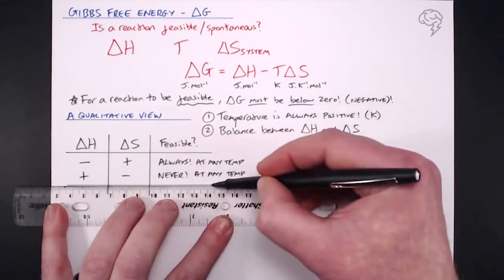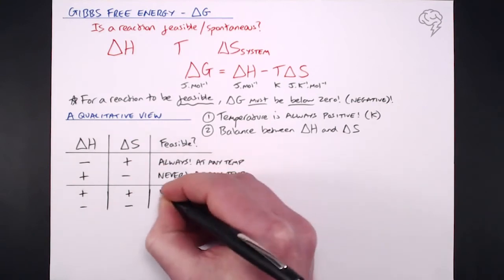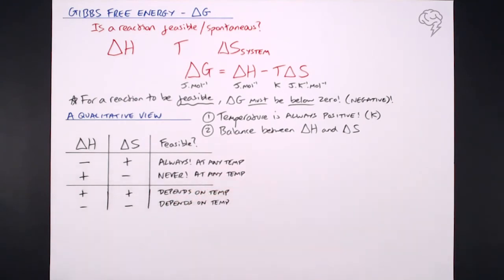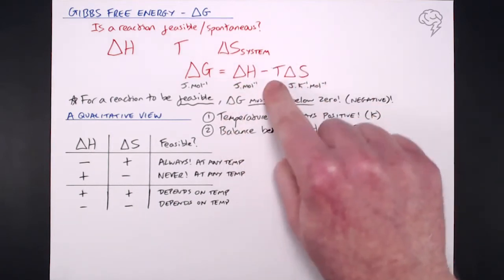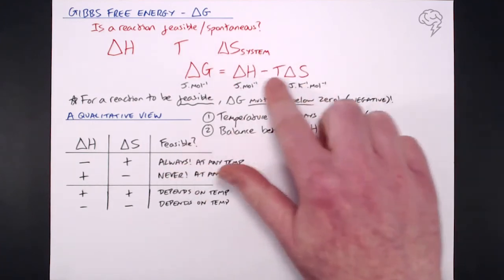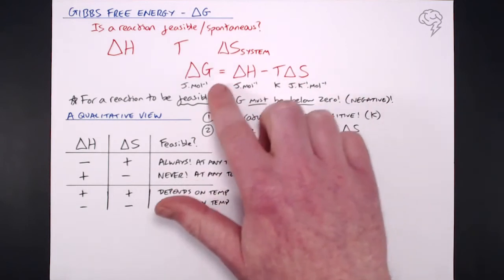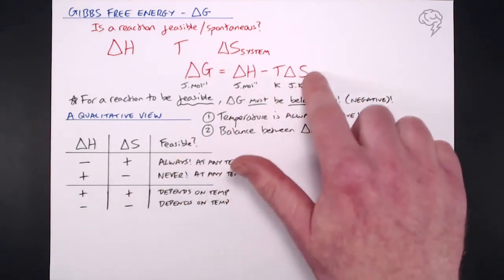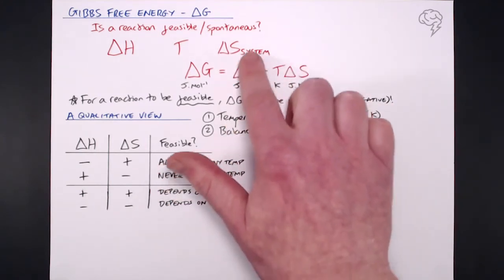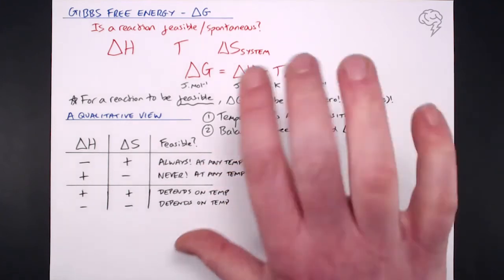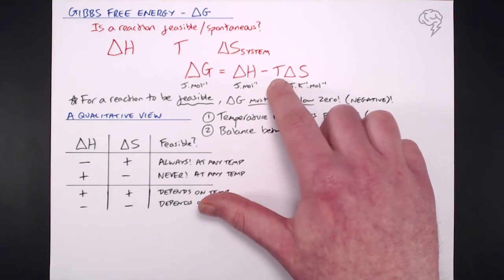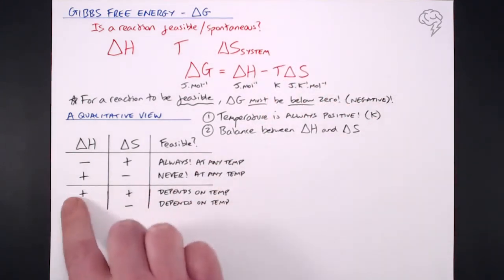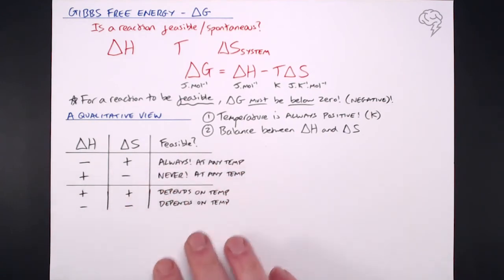But what if we've got a mixture? If we've got a positive delta H and a positive delta S, it depends on the temperature. Likewise, if both values are negative, it also depends on temperature. We actually need to do a calculation to find out what delta G is — we can't say for certain whether it's going to be positive or negative, because it's a balance between those two things and the temperature.